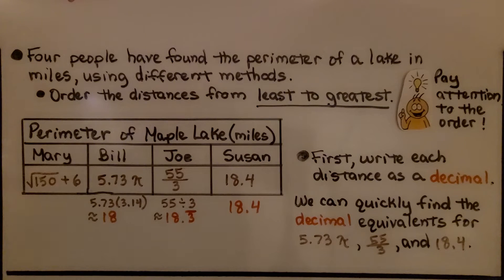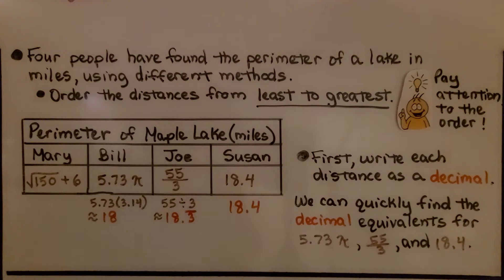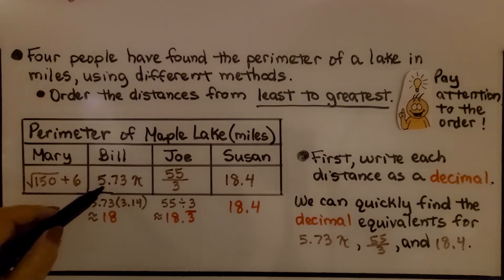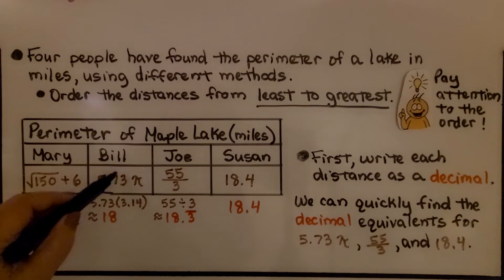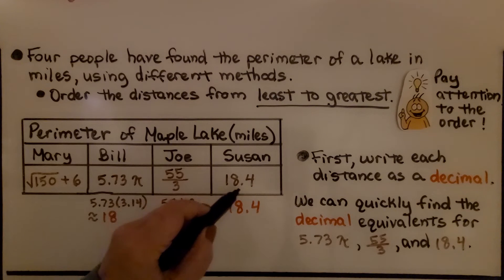Four people have found the perimeter of a lake in miles using different methods. Order the distances from least to greatest. So now we're going from least to greatest. Pay attention to the order. We have the square root of 150 plus 6, we have 5.73 times pi, we have 55 thirds, and we have 18.4.